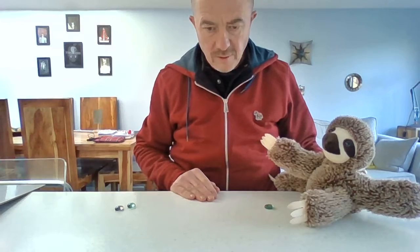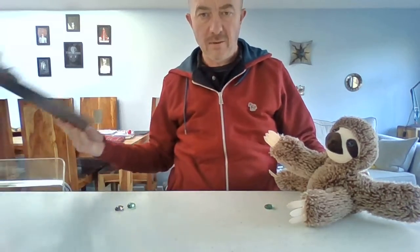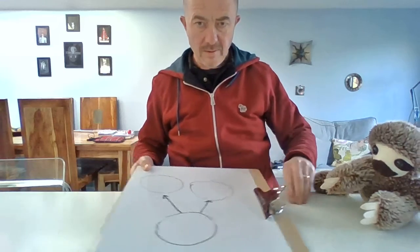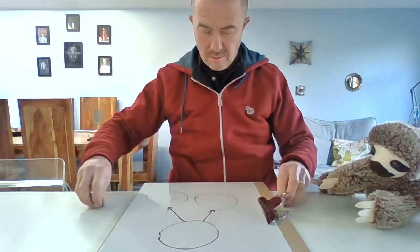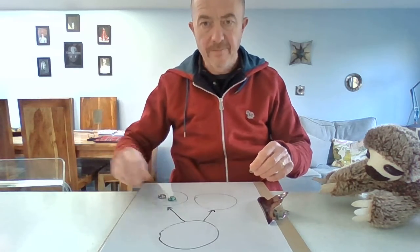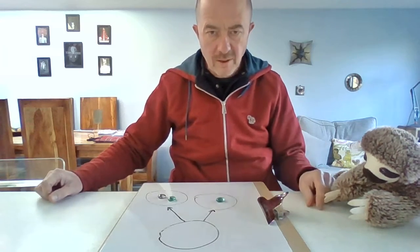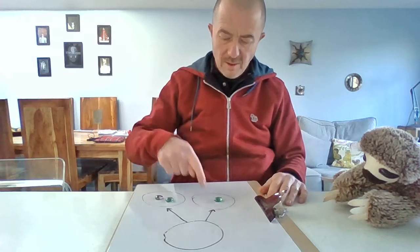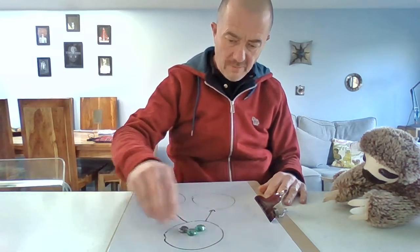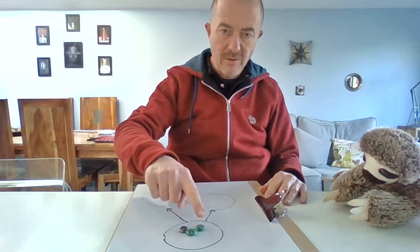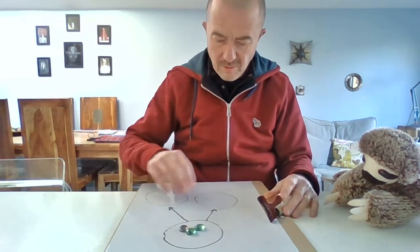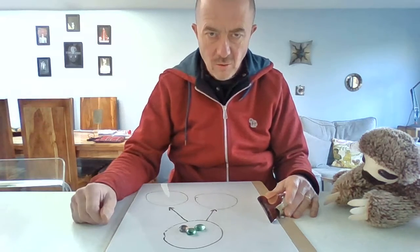Using our part-part-whole model we can very easily combine these, so I'm going to put my two parts in here. Susan's one part goes in here, so we've got a part of two and a part of one. To combine them we put them into the whole, and we can now see we have one, two, three things altogether. So two and one more made three altogether.